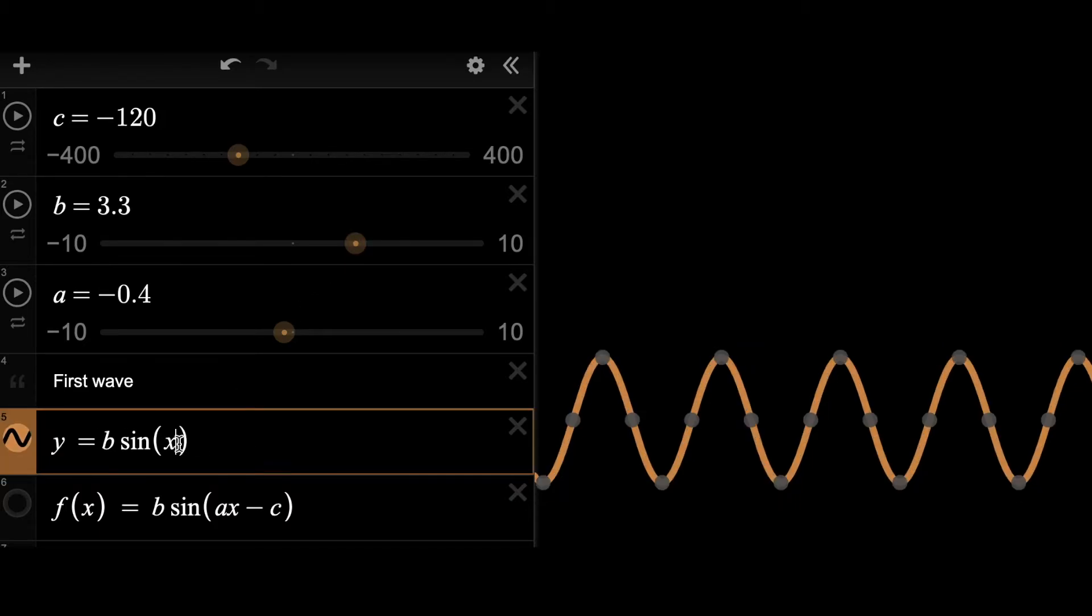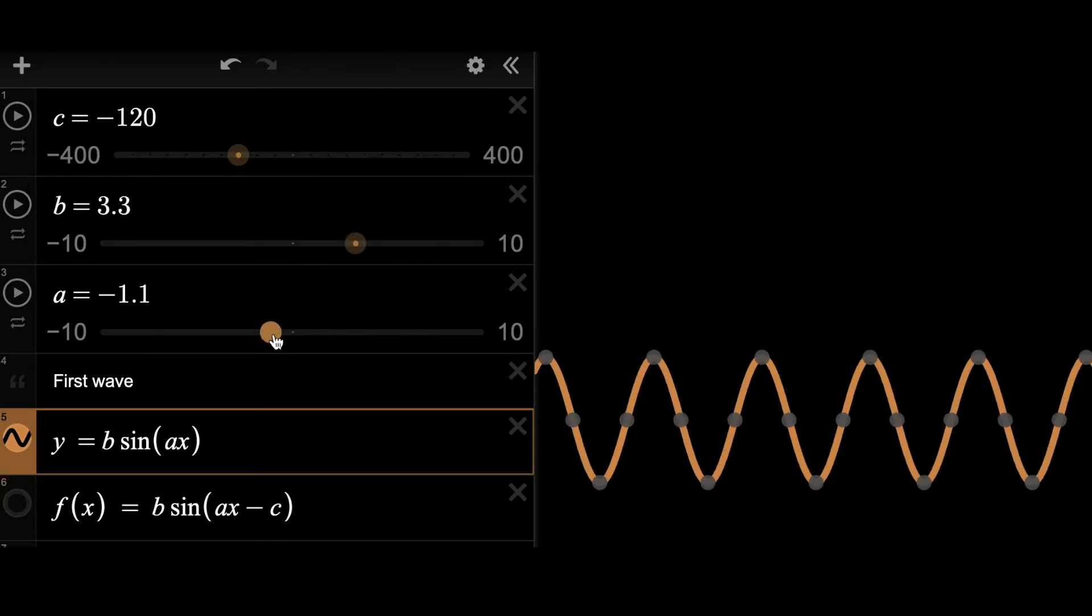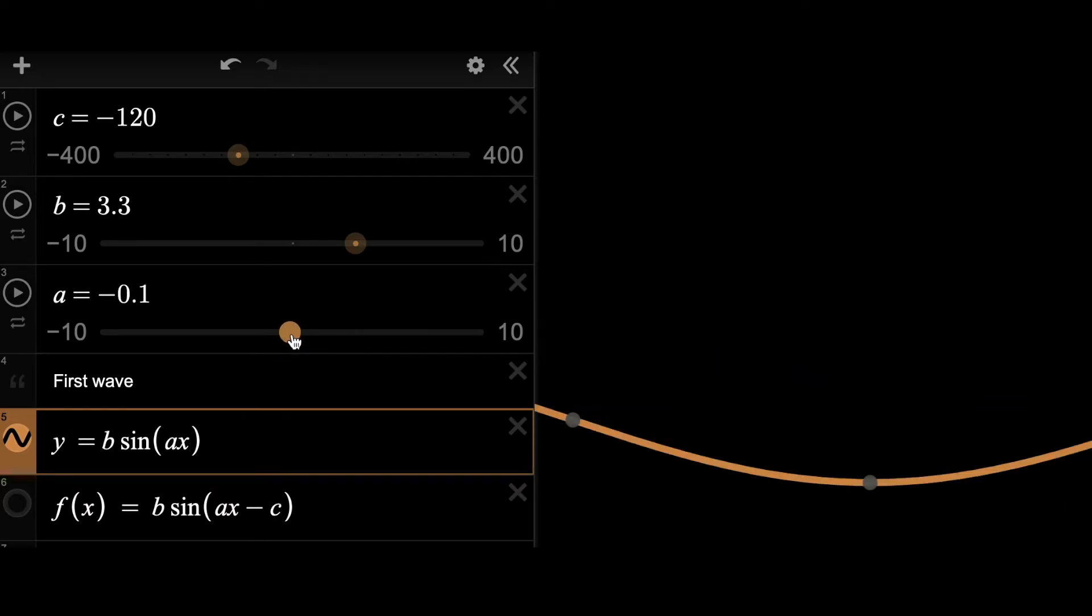Also, I can adjust the frequencies of the waves by multiplying the x value, the x variable, by a constant a. And again, I can adjust the value of a to shorten the frequencies or lengthen the frequency.